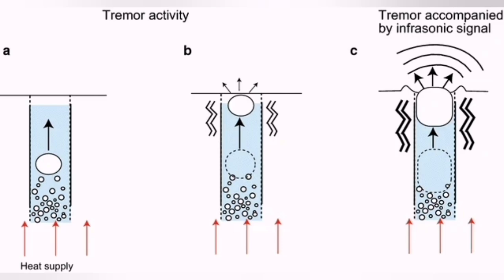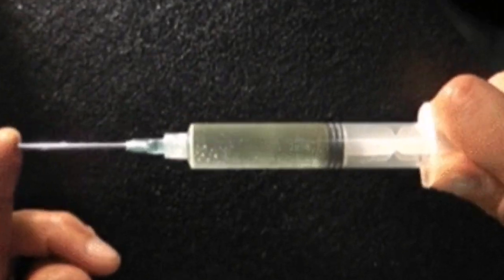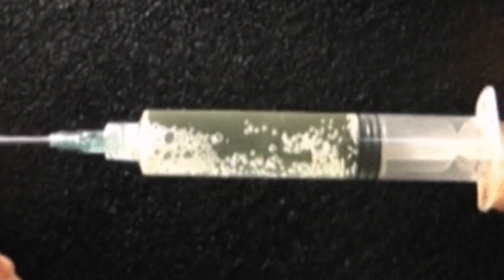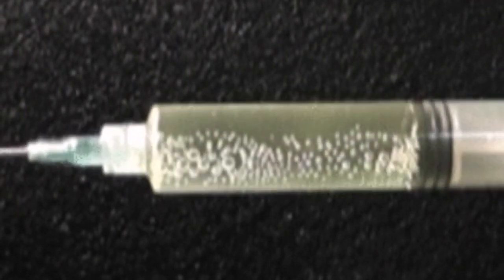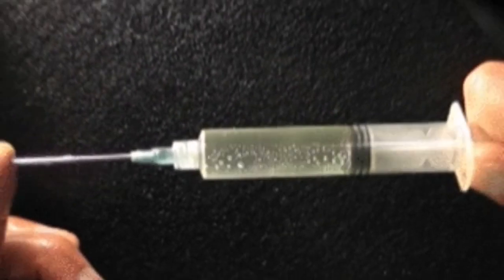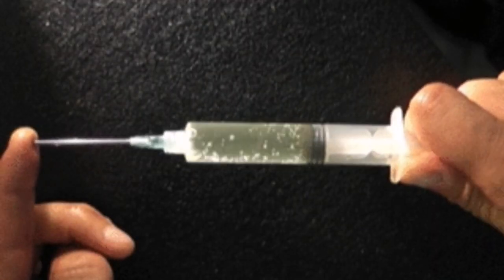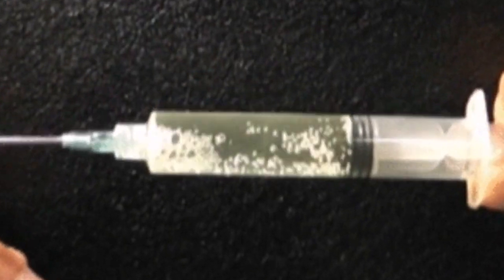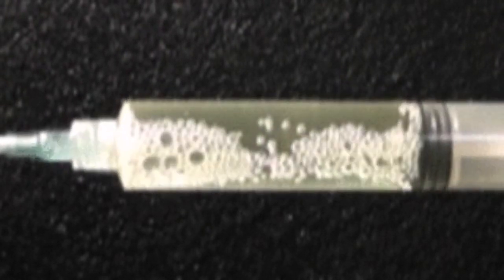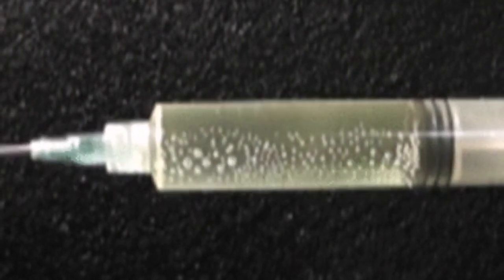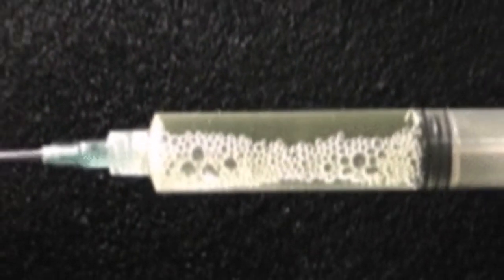Take a syringe, fill it up with liquid, put your finger on it and pull back the plunger, and you will see that bubbles form inside it. Do it several times and you can see that as the pressure is removed, bubbles of different sizes form. This is the reason that in the Reykjanes peninsula we have these tremors.